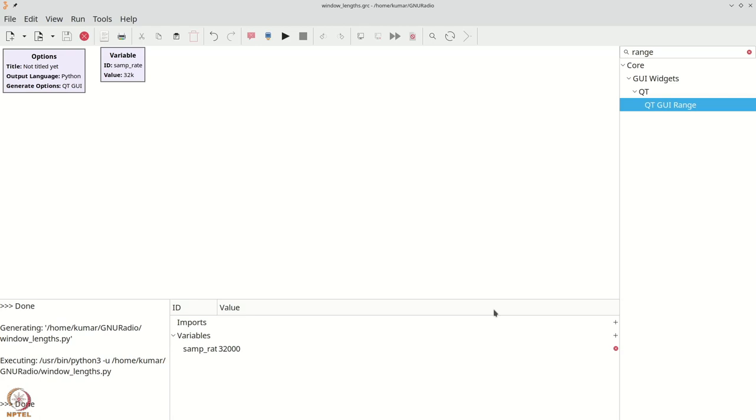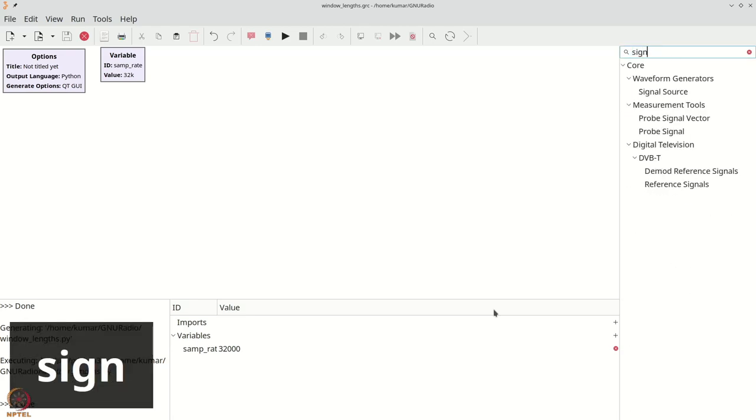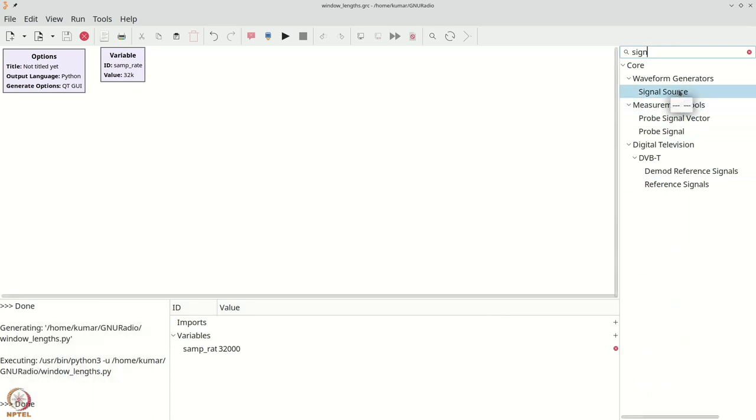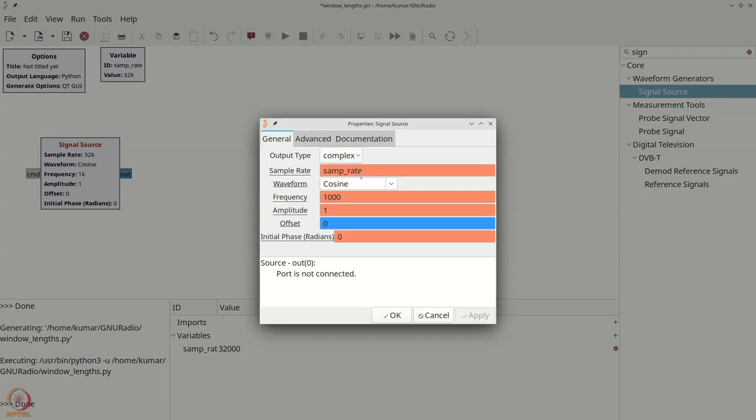As usual, we press control F or command F and type signal and you can grab the signal source, place it onto your flow graph. We double click it and change the complex to float because we want a real signal. We also want to be able to vary the frequency. Therefore, we will change the 1000 to the keyword FREQ and we will then add a QTGUI range that allows us to alter the frequencies. We will now click OK.